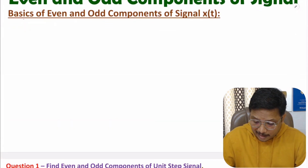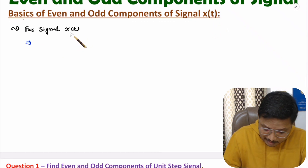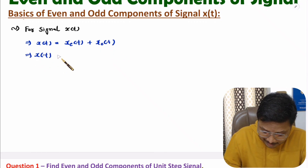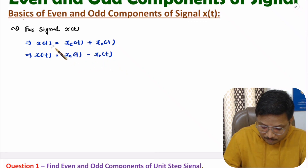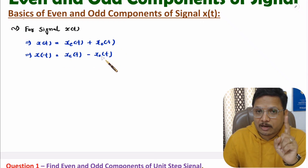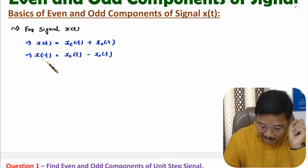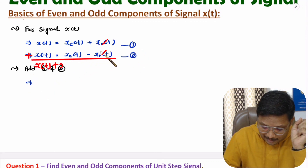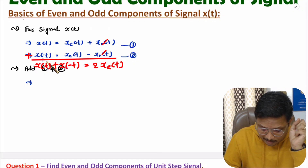If you have signal x(t), then x(t) is the algebraic sum of the even component and the odd component of the given signal. And x(-t) is the even component minus the odd component of the given signal. So x(t) equals even component plus odd component, and x(-t) equals even component minus odd component. If you add these two signals, the odd component gets cancelled, giving x(t) plus x(-t) equals two times the even component.